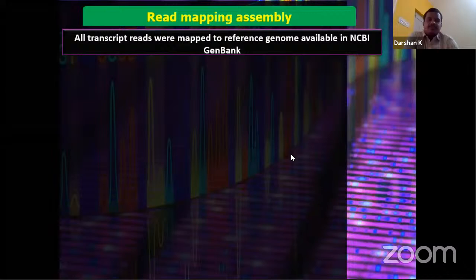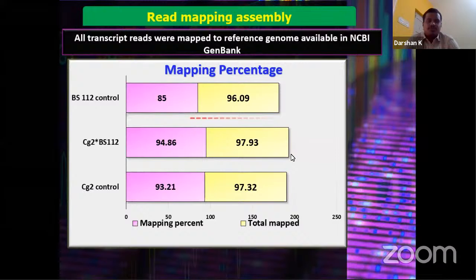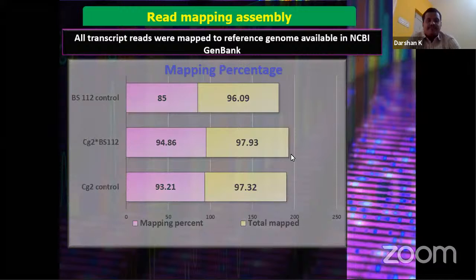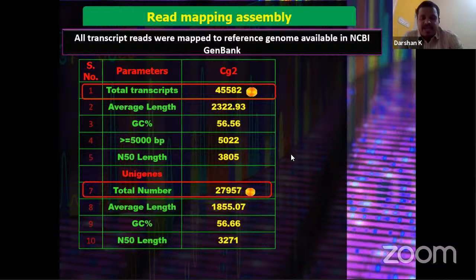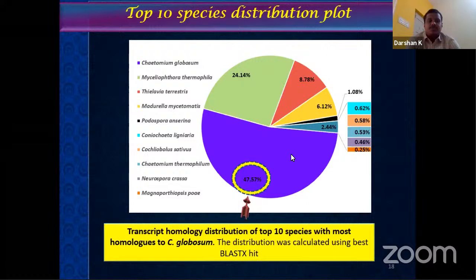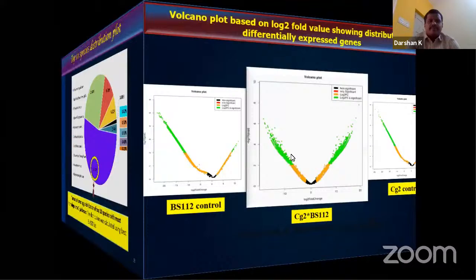When reads were mapped to the reference genome, the mapping statistics showed around 93–94% of reads were mapped to Chaetomium globosum. Read mapping assemblies yielded a total of around 45,582 transcripts with 27,957 unigenes. Homology distribution among the top 10 species showed that 47% matched previously available Chaetomium globosum sequences, followed by 24% related to Myceliophthora thermophila, a related genus.